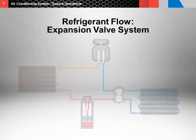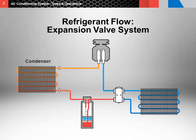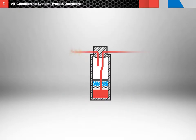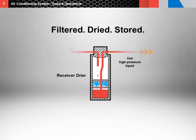Next, the refrigerant exits from the outlet port of the condenser as a hot, high pressure liquid and goes through the high pressure tube to the inlet port of the receiver dryer. As the refrigerant passes through the receiver dryer, it is filtered, dried, and stored. The refrigerant exits the receiver dryer as a hot, high pressure liquid.